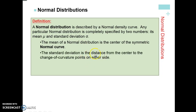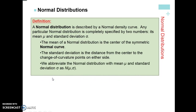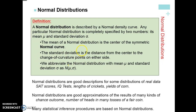The standard deviation is the distance from the center to the change of curvature points on either side — basically the distance from the mean to various parts along the curve. We abbreviate the normal distribution with mean mu and standard deviation sigma. When you see N, the first number in the parentheses is the mean and the second is the standard deviation. This is how it defines our curve — the curve is defined by how spread apart the data is.